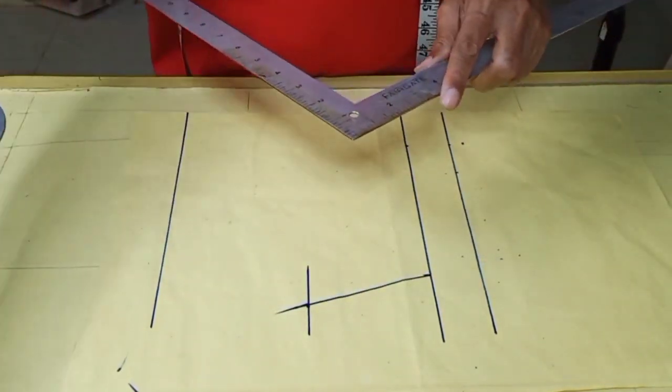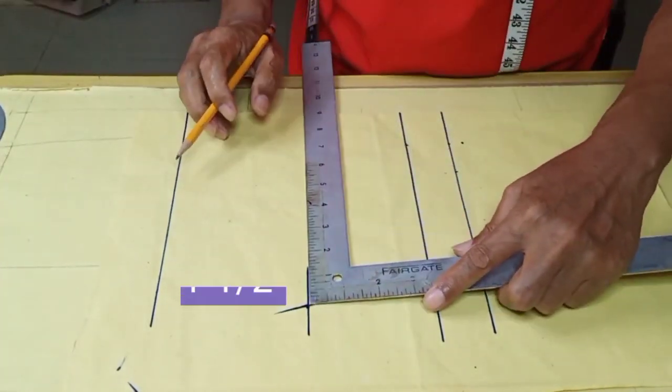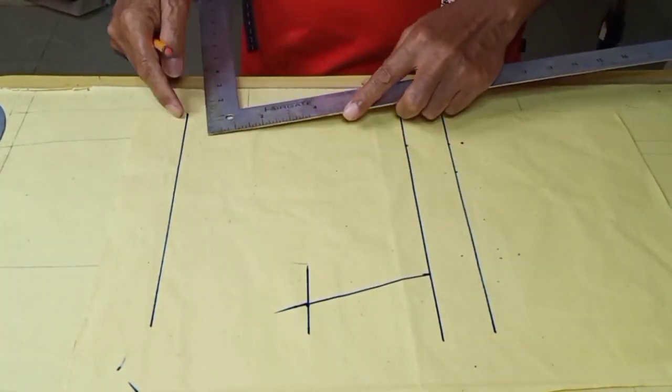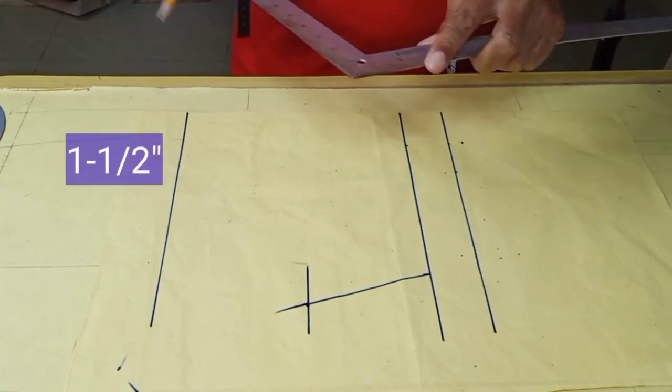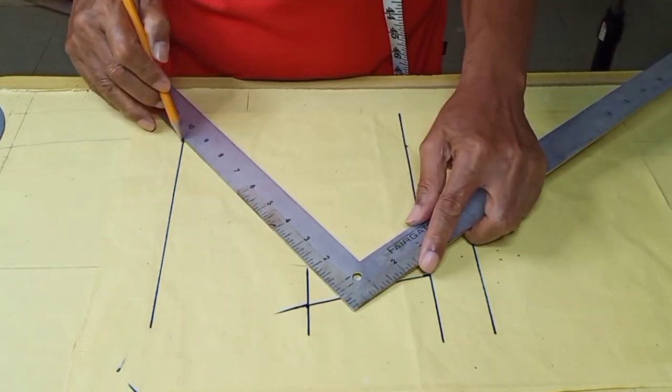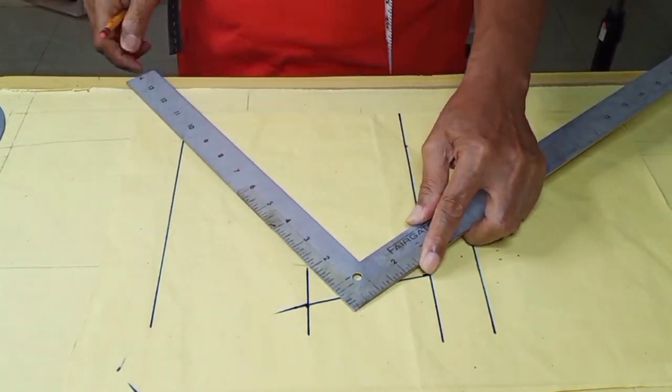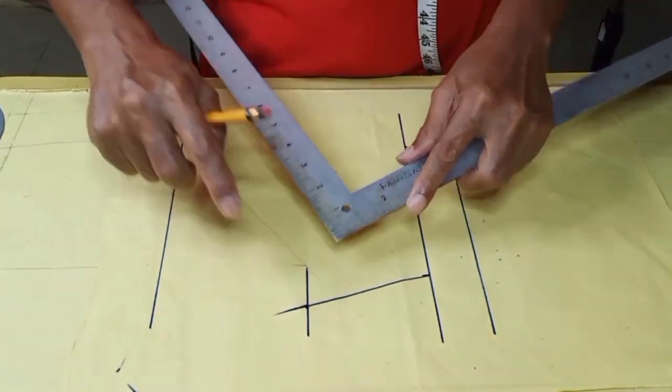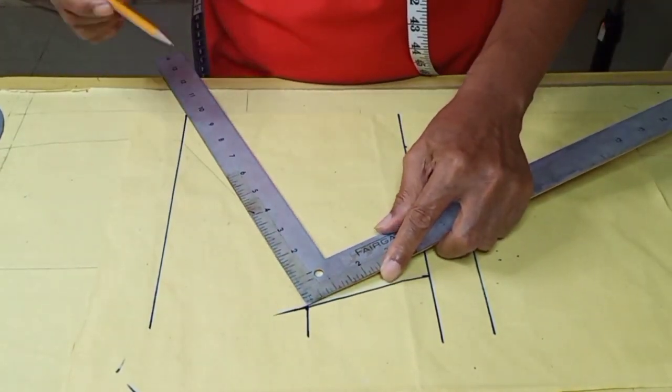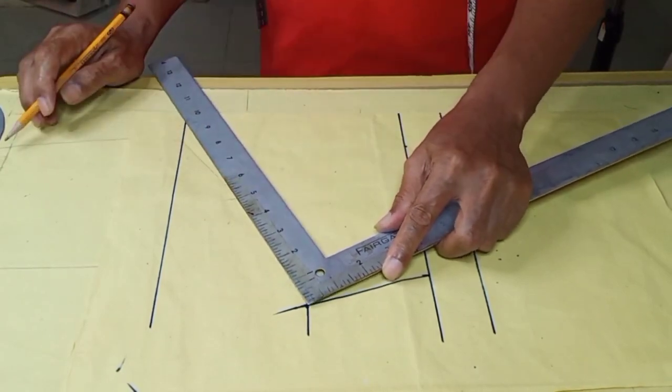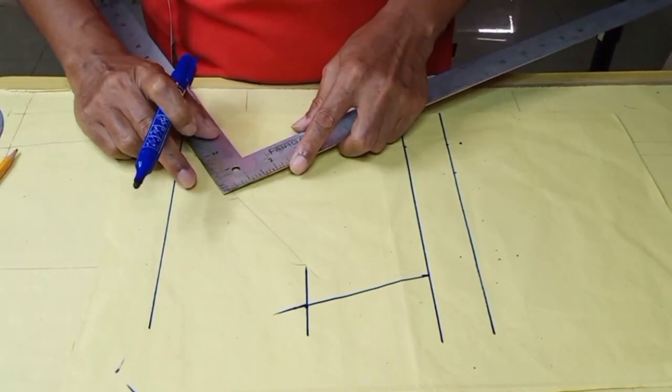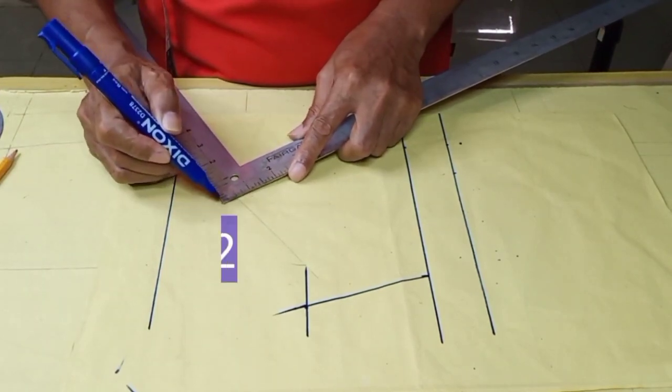From armpit point, take 1.5 inches. Also here, take 1.5 inches. Then connect both marks. From this point up to the armpit, mark 1/2 of it. From the line near the 1/2 mark, measure 1/2 of an inch upward.